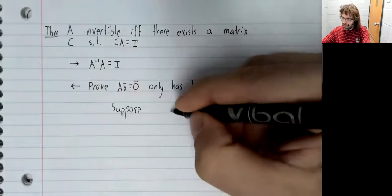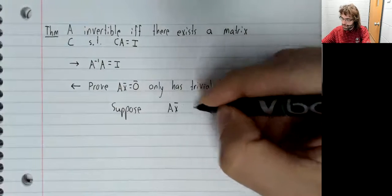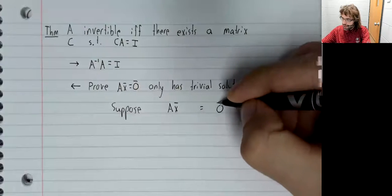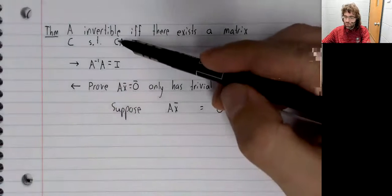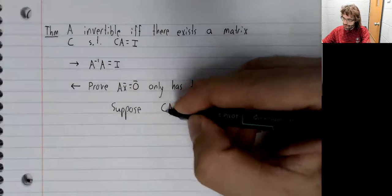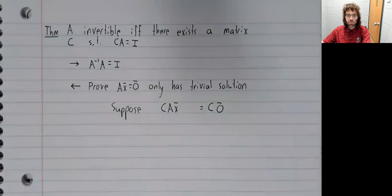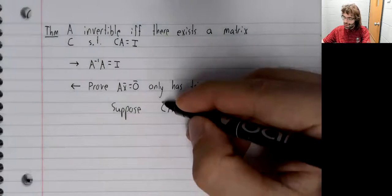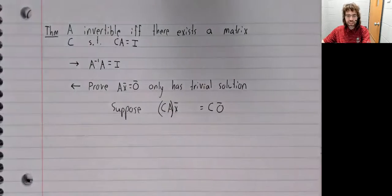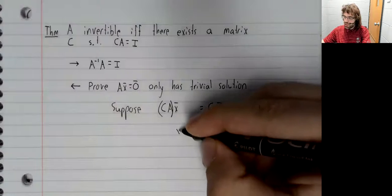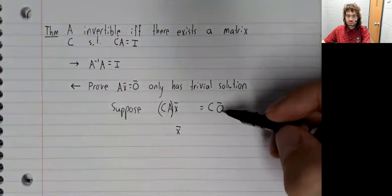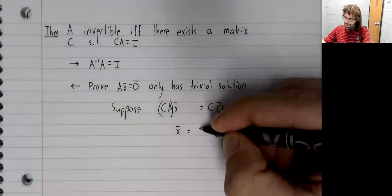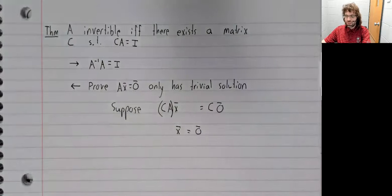Suppose that we have a solution, Ax equals zero. We're assuming this C exists. Multiply both sides of this equality by C. C A is the identity and the identity times x is x. Any matrix times the zero vector is the zero vector.